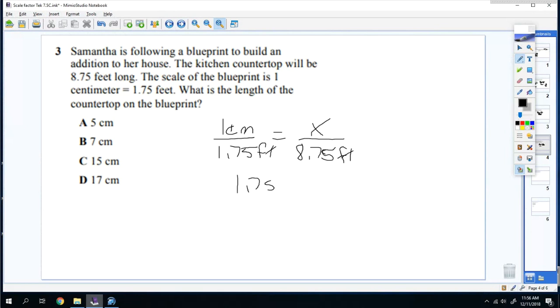Cross multiply, you get 1.75X is equal to 8.75. You divide it, and when you divide it, you get 5.